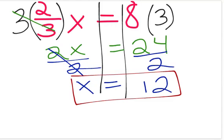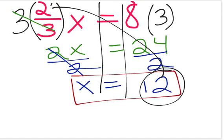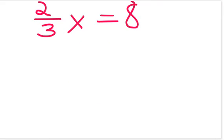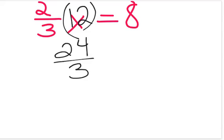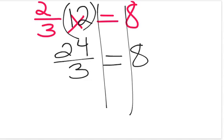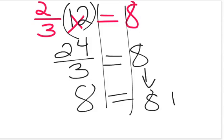When you're solving equations, it's always important to check your work. Let's check by substituting 12 in for x. 2 times 12 is 24 divided by 3 equals 8. 24 divided by 3 is 8, and indeed they are equal, so our equation is correct.